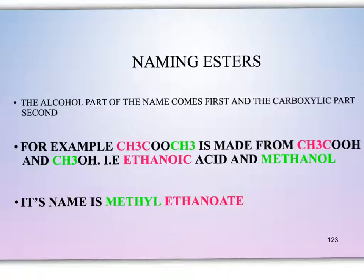When naming esters, an ester is composed of an alcohol part and a carboxylic part. The alcohol part will be named first and the carboxylic acid part will be named second. The carbon that is double bonded to the oxygen will be the carboxylic acid portion, and the carbon that is single bonded to the oxygen will be the alcohol part. An easy way to remember this: name the single bond part first, the double bond part second.